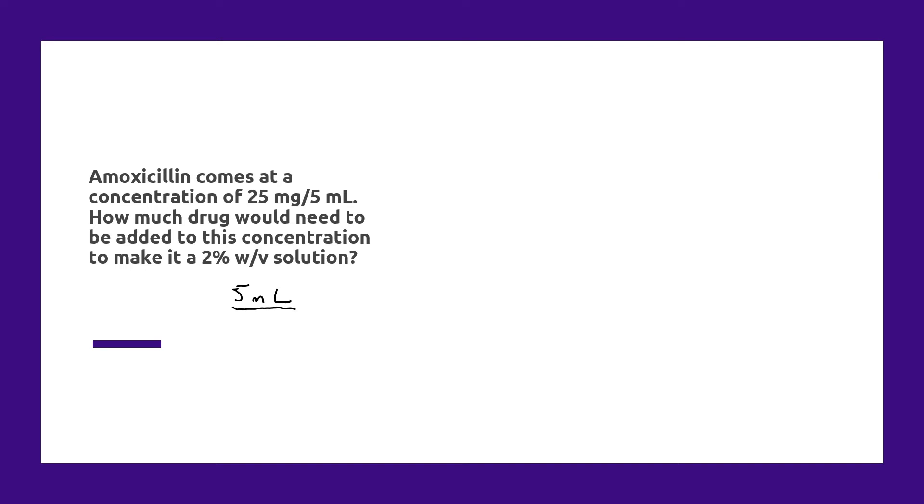So if we make that assumption, first you need to know what 2% means. Anytime you're dealing with the concentration of a solution that's weight per volume, the percentage means how many grams per 100 milliliters. So in the example of a 2% solution, that's 2 grams per 100 milliliters.